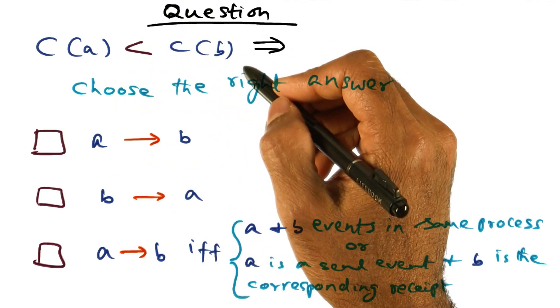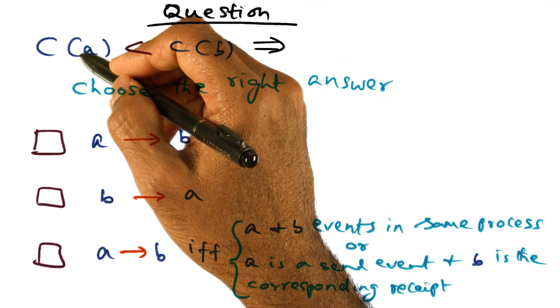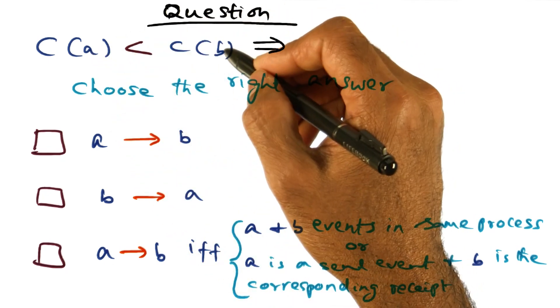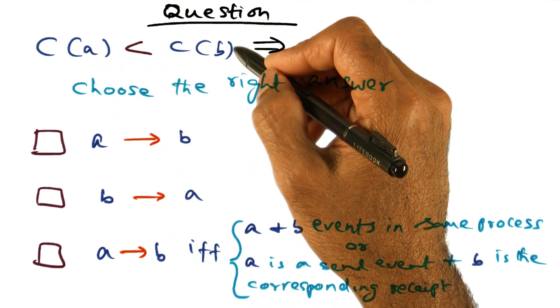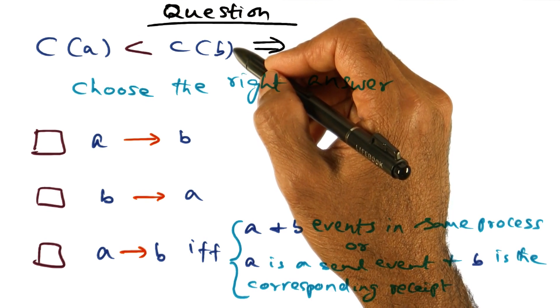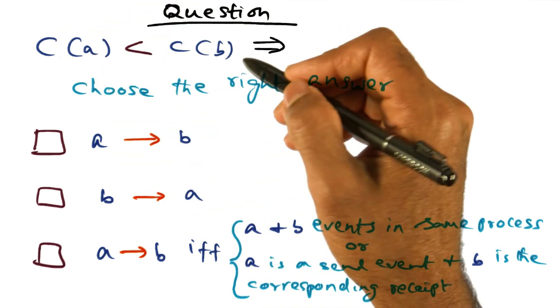So I want to make sure that you understand the premise of the problem here. What I'm saying is that the timestamp that is associated with the event A happens to be less than timestamp associated with the event B. That's what I'm observing by looking at a log record of all the events that took place in the system.